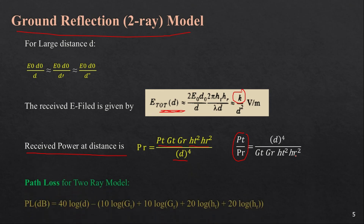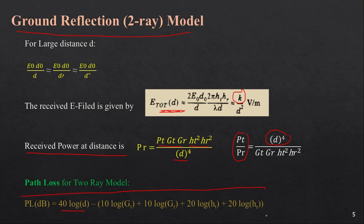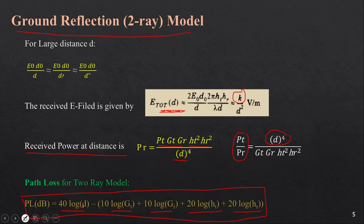Path loss is the difference between transmitted and received power, so we write P_t/P_r = d⁴ / (G_t * G_r * ht² * hr²). Taking the logarithm, the path loss for the two-ray model is: PL = 40*log(d) − 10*log(G_t) − 10*log(G_r) − 20*log(ht) − 20*log(hr). This equation accounts for transmitter and receiver heights, transmitter and receiver gains, and the distance between them. Thank you for watching.